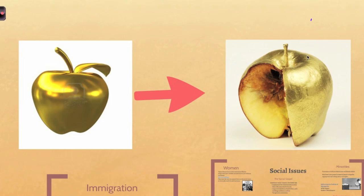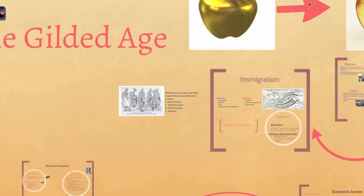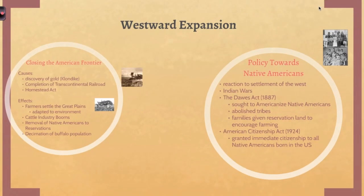For the sake of the Gilded Age, the outside looked really good. We were making lots of money in the United States, lots of profit, lots of big businesses, but on the inside there were issues — a lot of social issues especially — and we're going to go through these in this video. Let's look at the first big issue that happened during the Gilded Age, and that's going to be the issue of westward expansion.